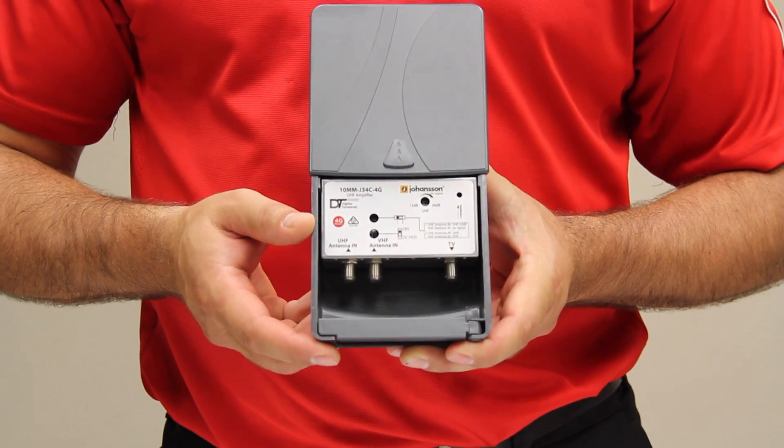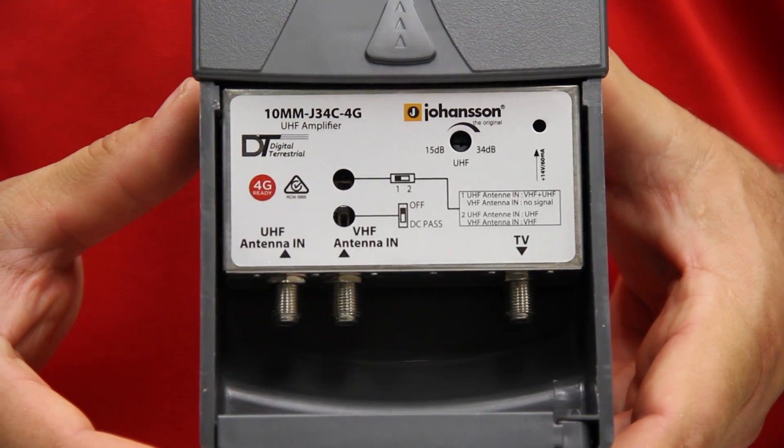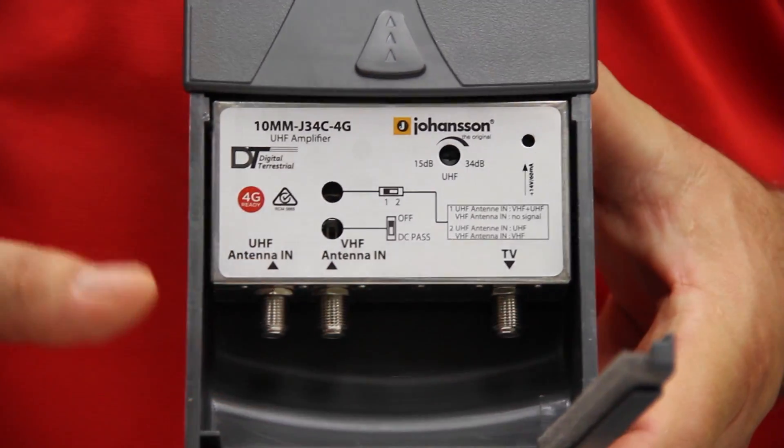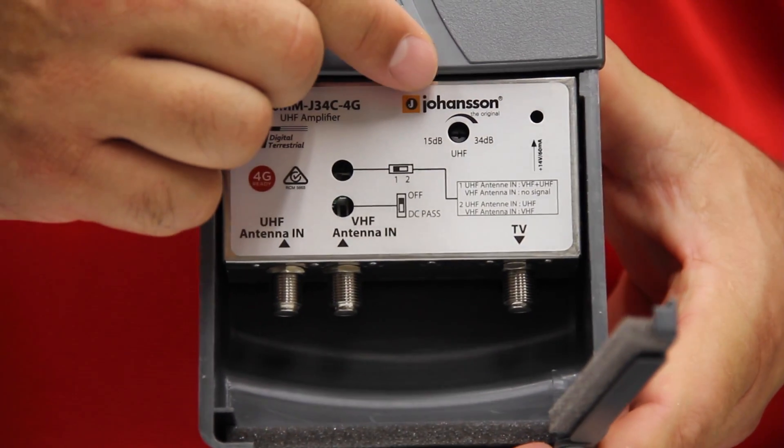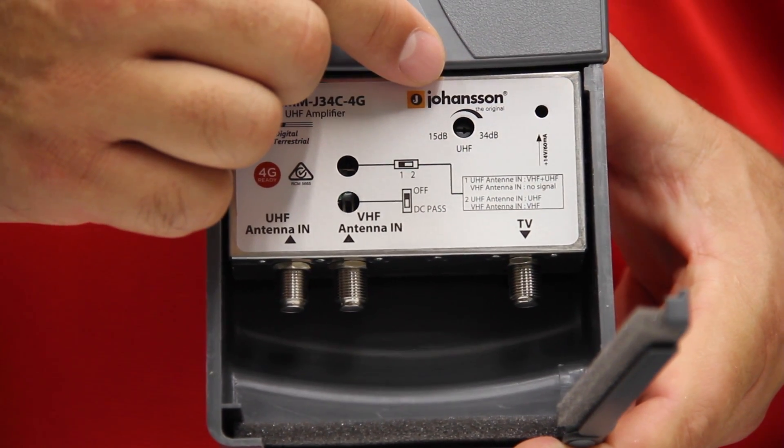It has a maximum gain of 34 dB for UHF. It can be used as a combination input amplifier by setting the selector switch to position 1, or used purely as a UHF amplifier with a separate passive VHF input by setting the selector switch to position 2.